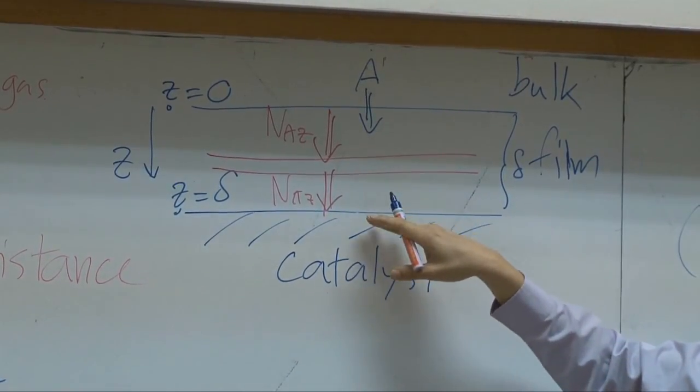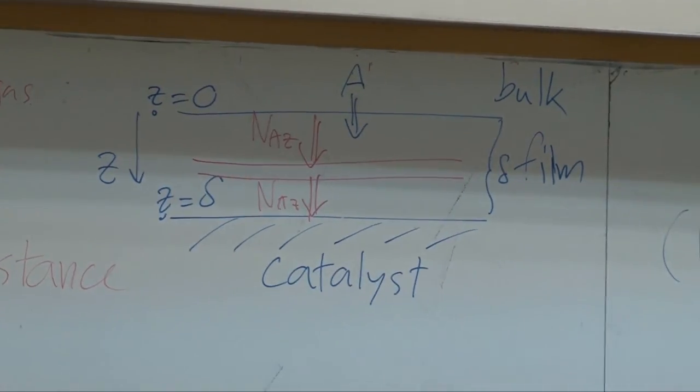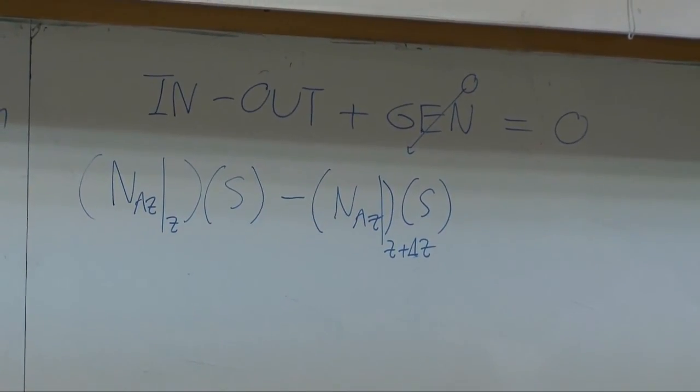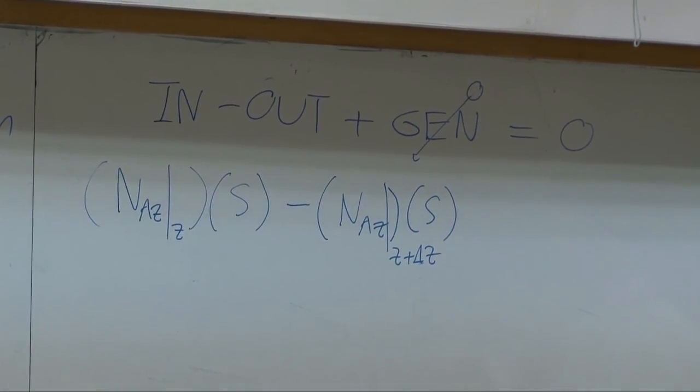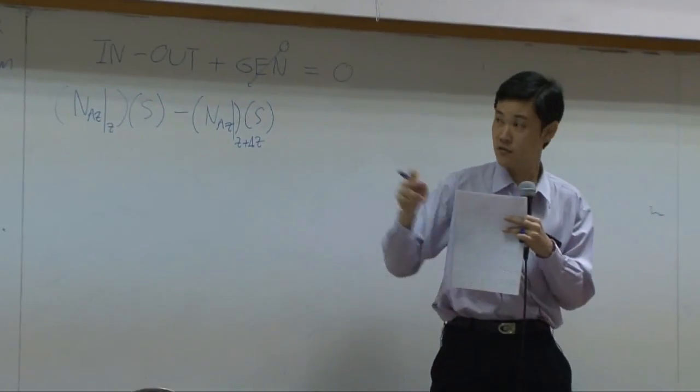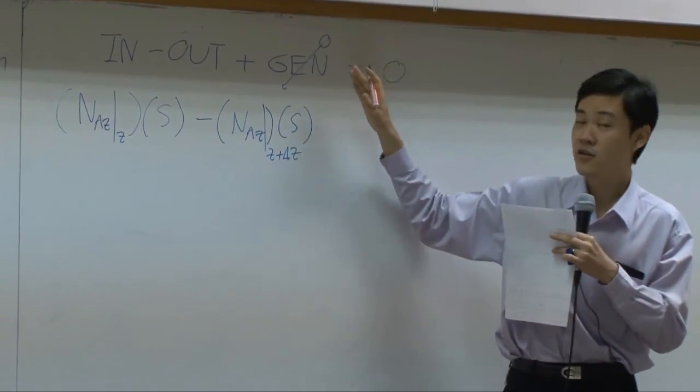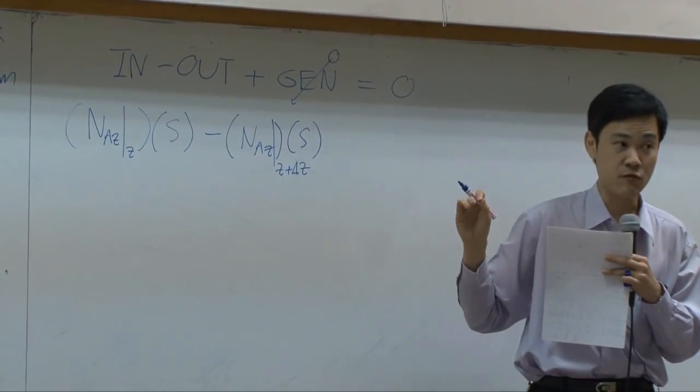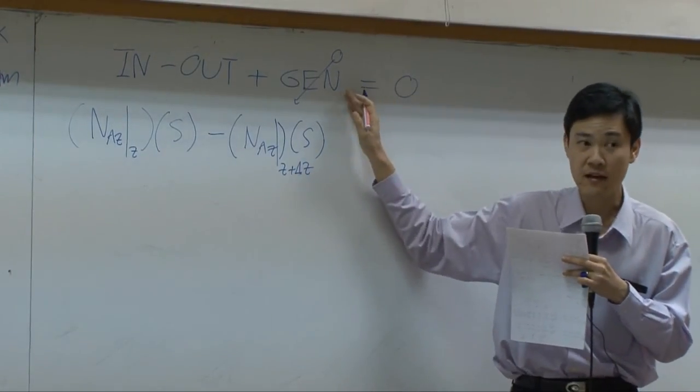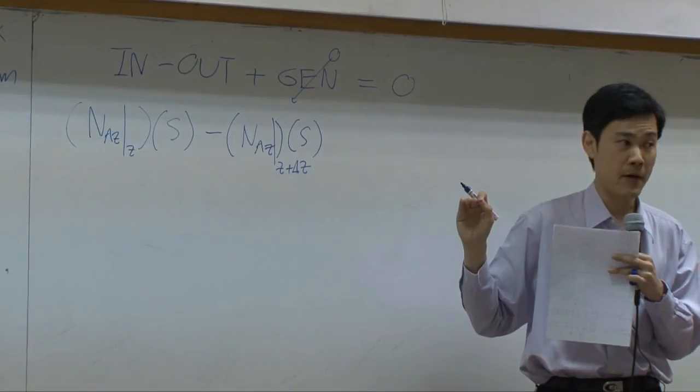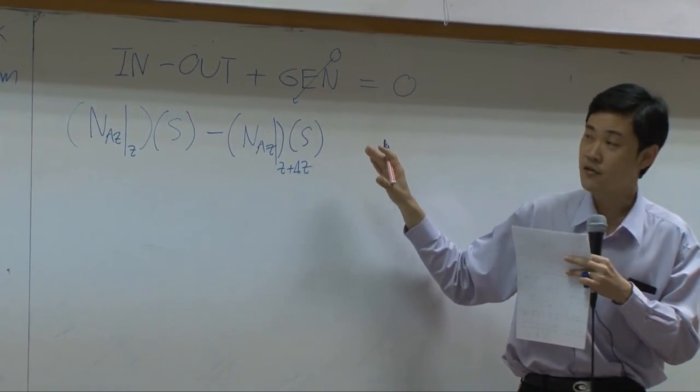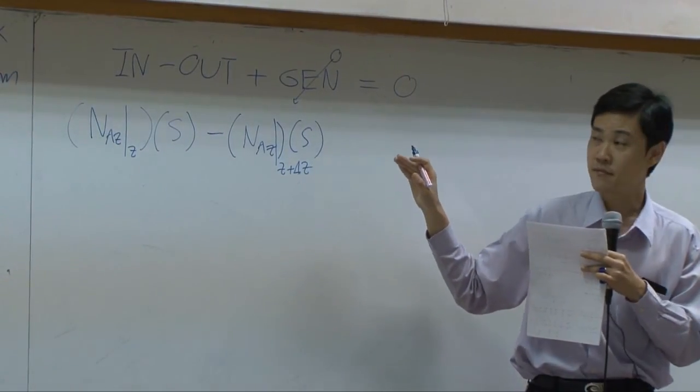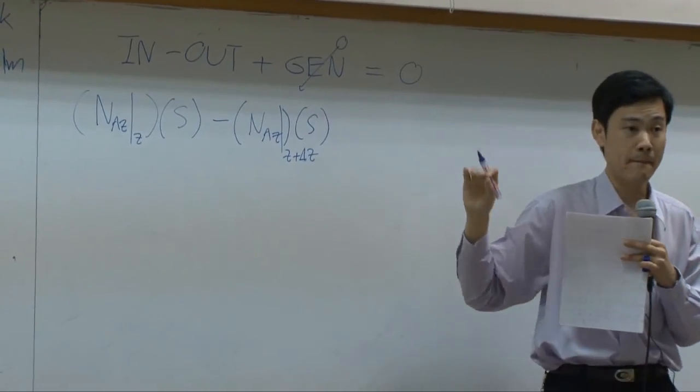So there is no reaction within the shell. Therefore, generation term becomes zero. In the simple word, whenever you have heterogeneous reaction, this is heterogeneous reaction, the term generation becomes zero. But whenever you have homogeneous reaction, then you have to take into account the generation term. For heterogeneous reaction, reaction would appear in the boundary condition, not in the balance.